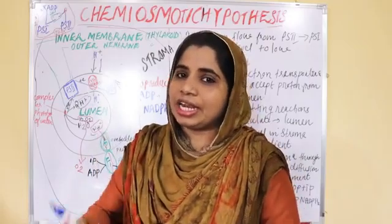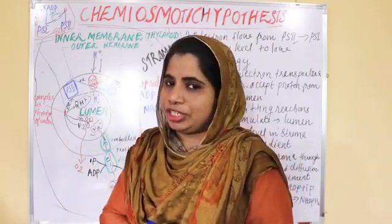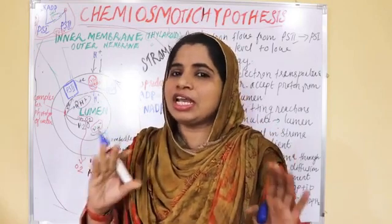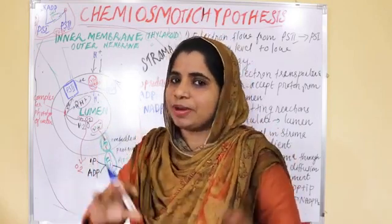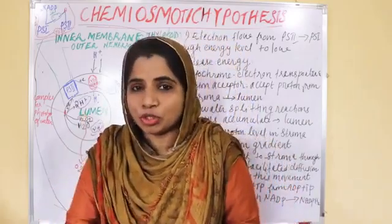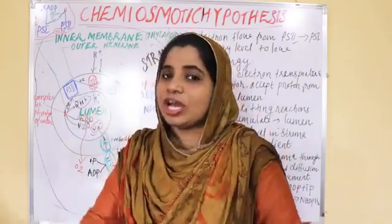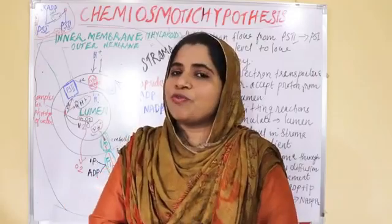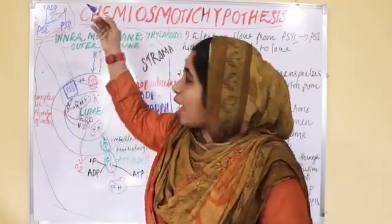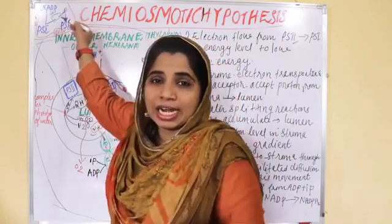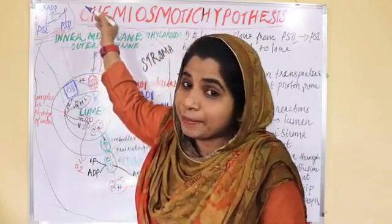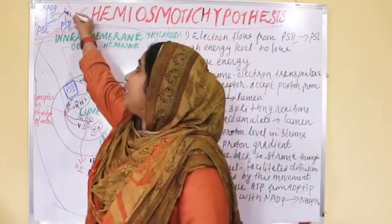Non-cyclic photophosphorylation. Now you can see there are two photosystems: Photosystem 2 — P680 — and Photosystem 1 — P700. Photosystem 2 activates and there are high energy electrons emitted out.